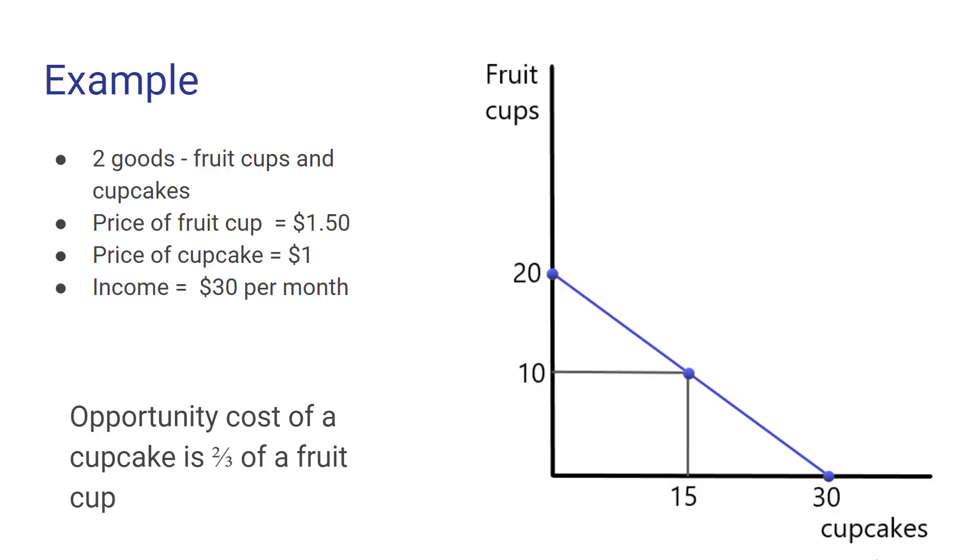If we take that example we worked through earlier, we know that the slope of this relationship will be equal to the price of good X, the good on the horizontal axis, which we've established is 1, divided by the price of the good on the vertical axis, which in this case is fruit cups, at a price of $1.50. So the slope of that will equal negative 1 over 1.50 or just two-thirds. And what that's telling us is that the opportunity cost of one cupcake is that we give up two-thirds of a fruit cup.